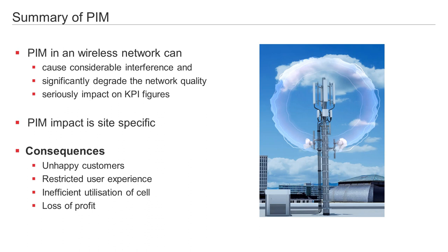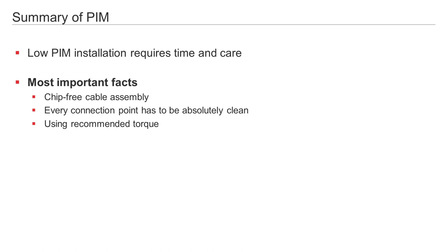A summary of PIM: PIM in a wireless network can cause considerable interference and significantly degrade network quality. PIM is having a serious impact on KPI figures and ultimately results in low return on a mobile network operator's investment because PIM reduces the performance of a site. PIM is site-specific. Consequences include unhappy customers, restricted user experience, inefficient utilization of cell, and loss of profit. A low PIM installation requires time and above all, care.